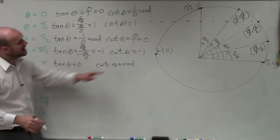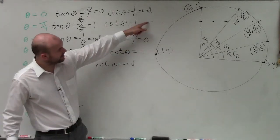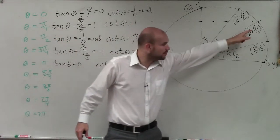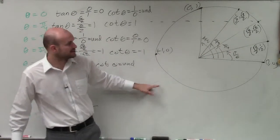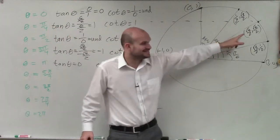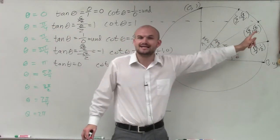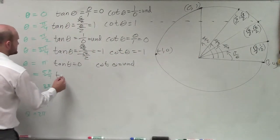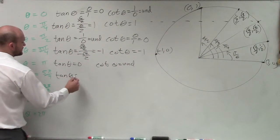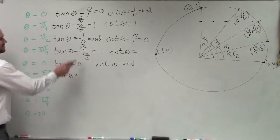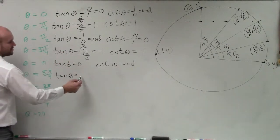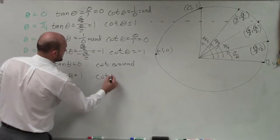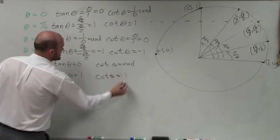For 5 pi over 4, that's this point reflected into the third quadrant, so both x and y are negative. Since one over the other — negative square root of 2 over negative square root of 2 — gives positive 1, the tangent equals 1. And the cotangent of theta is going to be the exact same thing — also positive 1.